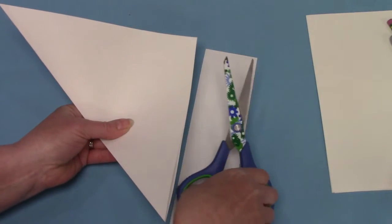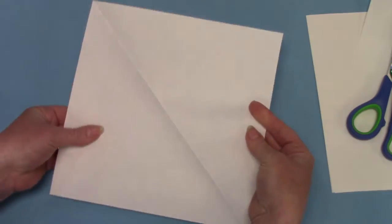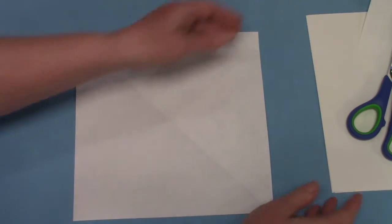And that will get rid of the edge of the paper, so that when I open my triangle up, it becomes a square. Did you know that when you fold a square in half, it makes a triangle?